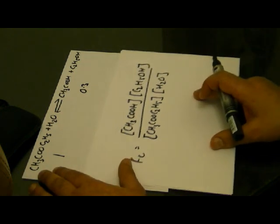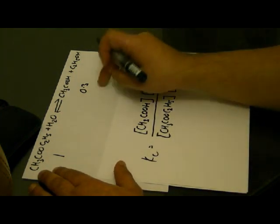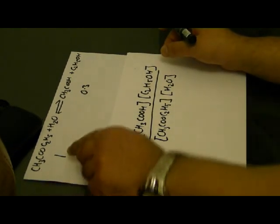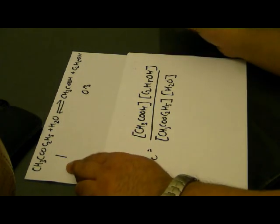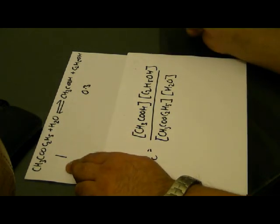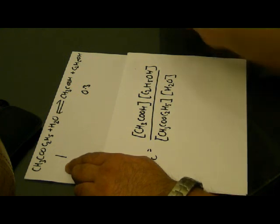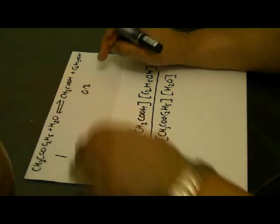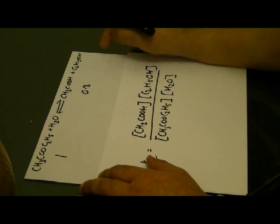Now the problem is, we know the concentration of ethanoic acid. And what we have to think about is, if we take the molecule, ethyl ethanoate, it will snap into two products. One molecule of ethyl ethanoate will break into one molecule of ethanoic acid and one molecule of ethanol.